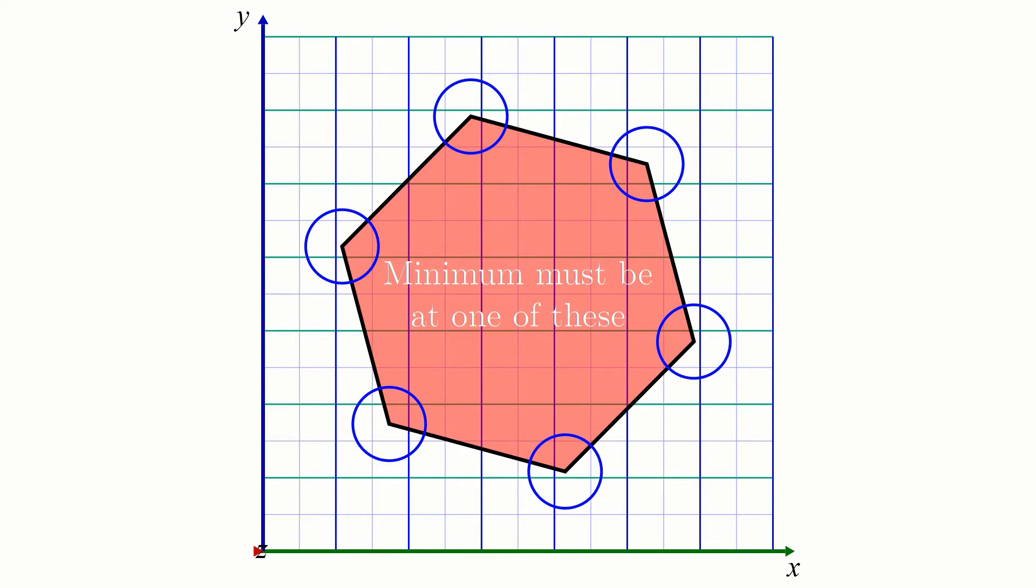Thus, all we have to do is check the value of the objective function at each of the corners, and the lowest corner we get must be the minimum for the entire feasible region.